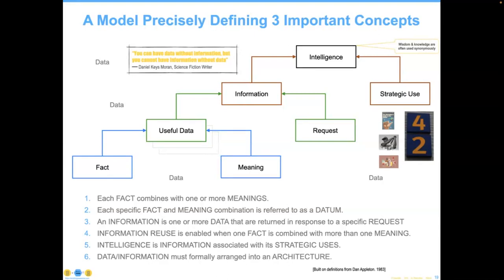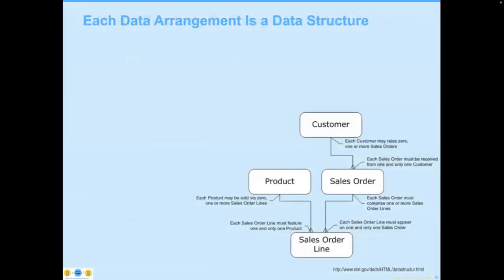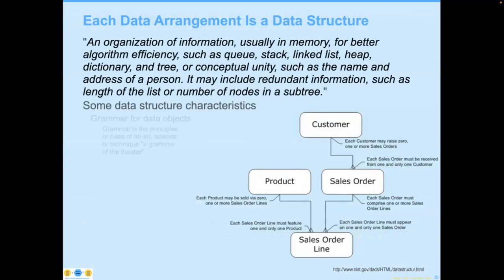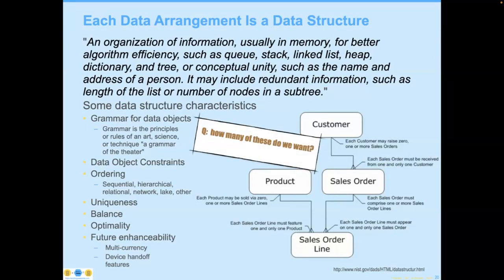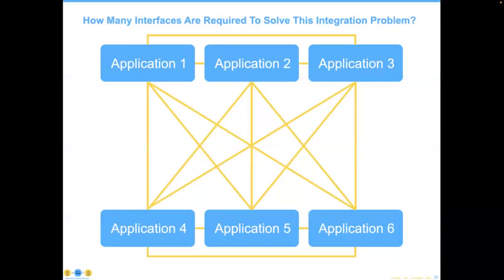The rules for the grammar ask: what can customers do? Are they unique? Is there a balance? How many data structures do we want? The answer is as few as possible. If we ever have an option of creating something new versus modifying what we have, keeping the existing structure should be our answer in today's data world. The numbers are so intense for some organizations it becomes really problematic. If you look at a hypothetical situation of just six applications connecting to each other, if everything was truly connected to everything else, it would be 15 interfaces.